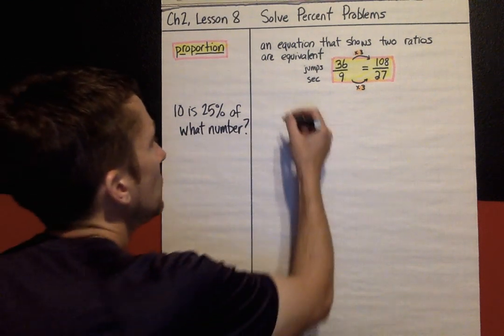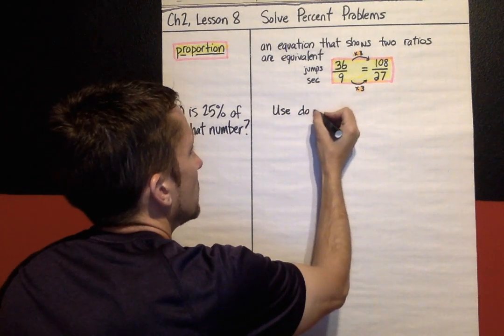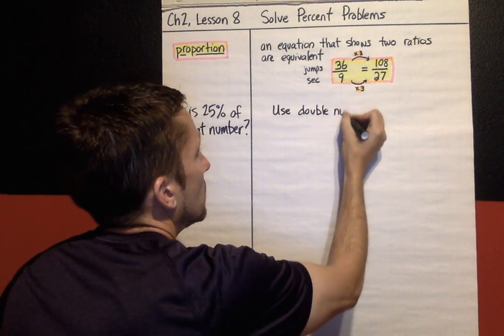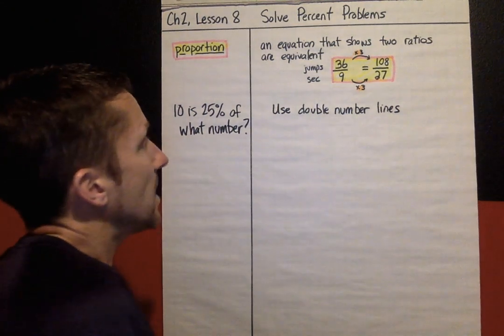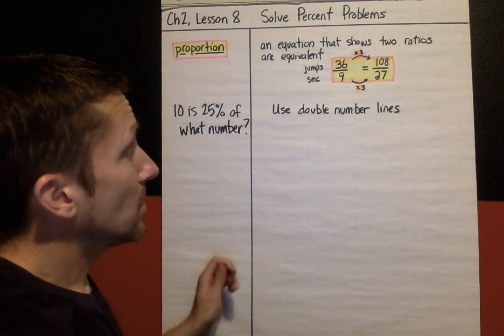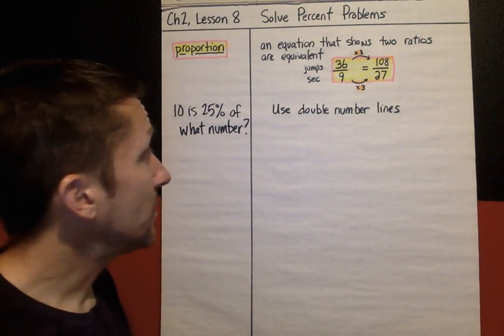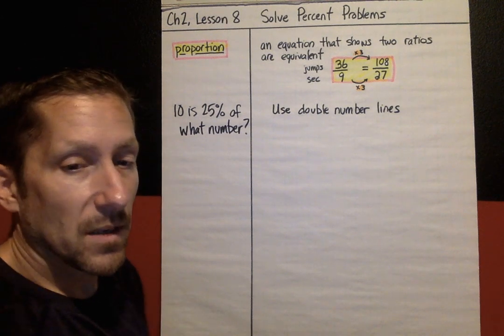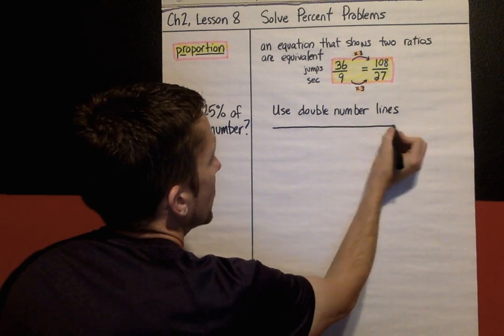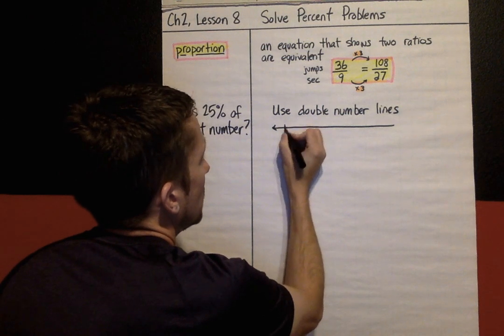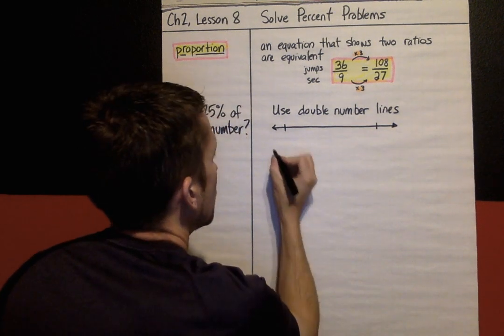And on your practice today, your book, it will have double number lines when it's wanting you to use double number lines. So you don't have to draw the number lines. But here's what this strategy looks like. You have two number lines completely one on top of the other.